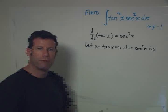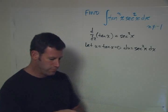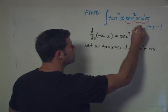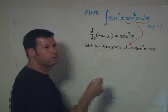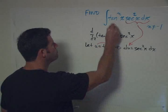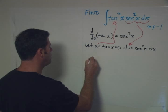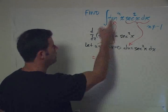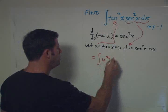And so now the problem reduces to a polynomial. Because we can take all of this, secant squared of x dx, and that becomes du. And then tangent of x becomes u. So this equation then becomes the integral of u to the nth du.